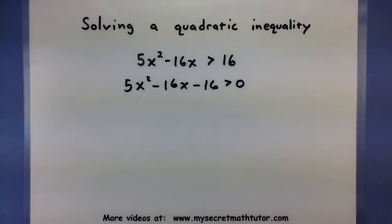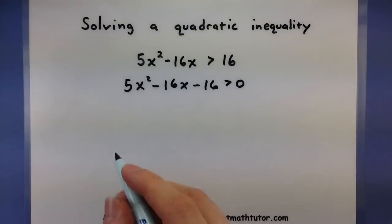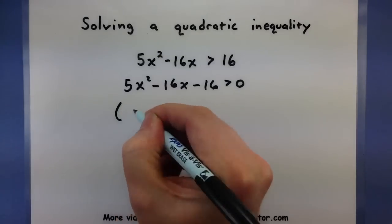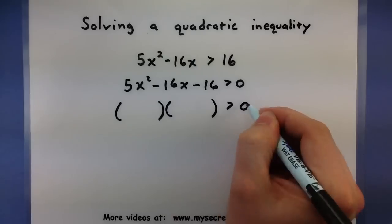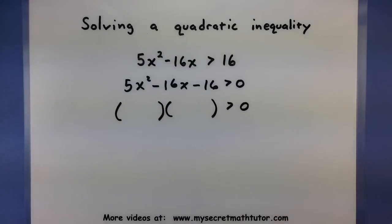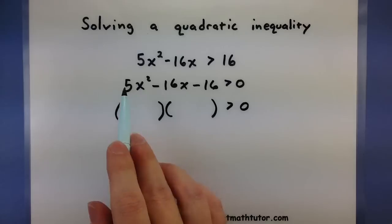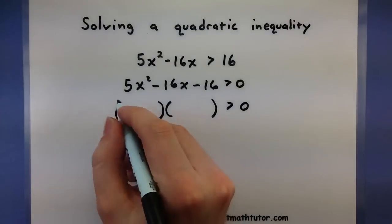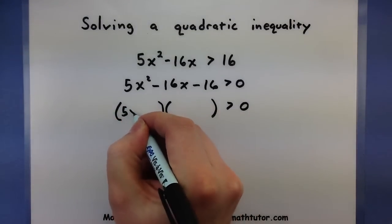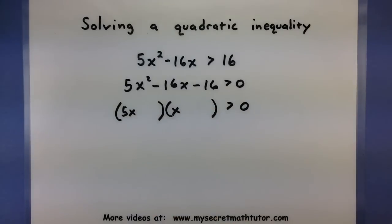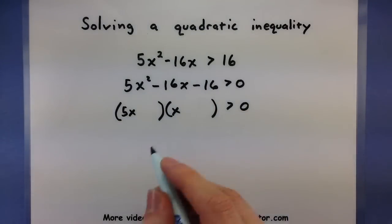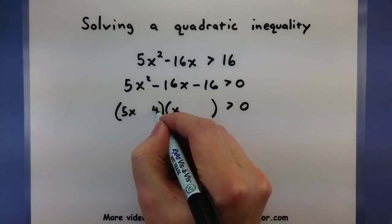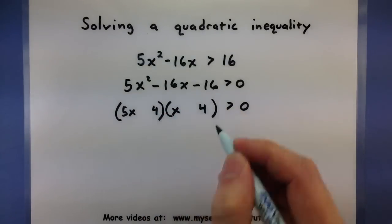You can usually find where it equals zero by factoring or using the quadratic formula. For this one, I'm just going to factor it. We'll break it into two factors and determine what numbers we need. I need two numbers to give me 5x², so 5x and x. Now I need two numbers that will give me 16, so let's do 4 and 4.